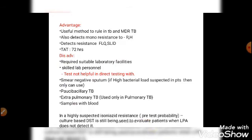The advantages of LPA include being a useful method to rule out tuberculosis and MDR-TB, since rifampicin and isoniazid resistance together constitute MDR-TB. It also detects mono-resistance to rifampicin and isoniazid, and in second-line LPA, it can detect resistance to fluoroquinolones and second-line injectable aminoglycosides. Importantly, it gives results within 72 hours, which is a very good feature of LPA.